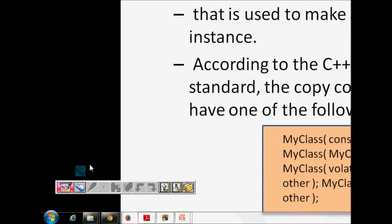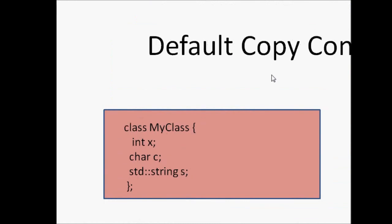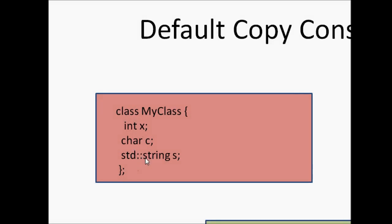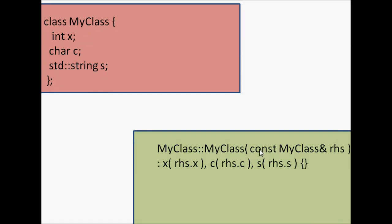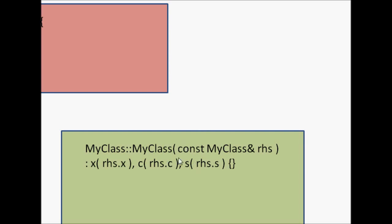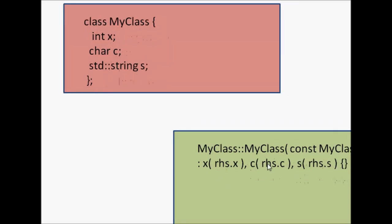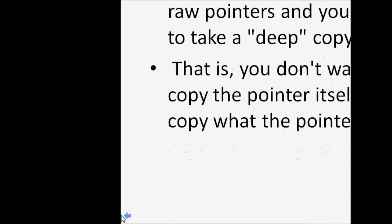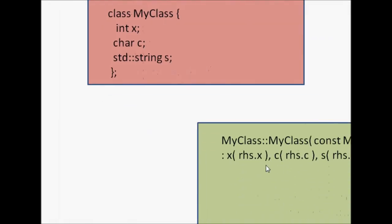Now let's look at the default copy constructor. If you have a class 'MyClass' with three parameters — int x, char c, and string s — and you don't write a copy constructor, a default one is provided. It takes a const reference and performs a shallow copy: x becomes rhs.x, c becomes rhs.c, and s becomes rhs.s. This is shallow copy — we are just copying the values.